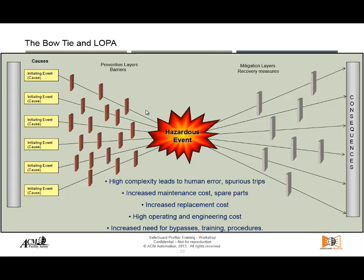On the left-hand side of your bow tie will be the preventive layers — trying to prevent that hazardous or unwanted event from happening. On the right-hand side you have the mitigation layers or recovery measures, meaning after you've had the unwanted event. I need to cope with those situations and stop the sequence of events so the worst credible consequence doesn't come to pass — stopping that mechanism before it reaches the target.